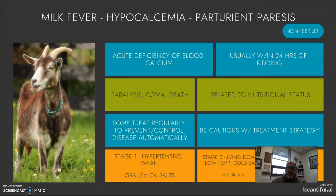Hypocalcemia — also known as milk fever or parturient paresis — is a deficiency of blood calcium that oftentimes occurs within 24 hours of kidding or ewes giving birth. You'll see paralysis, comatose states setting in, and death. It is very often related to nutritional status.